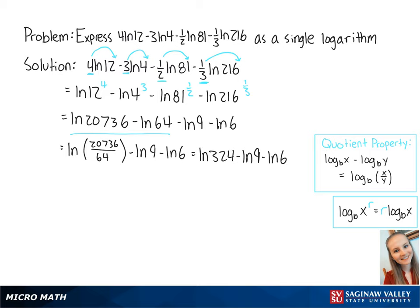We're going to use the quotient property again to combine these two logs. This becomes the ln of 324 over 9 minus the ln of 6, which equals the ln of 36 minus the ln of 6.